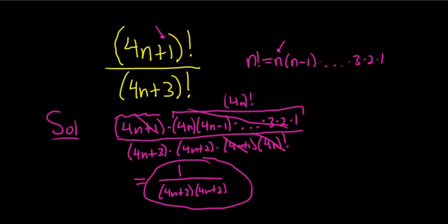There's a faster way to do this. If I was doing this on my own, I would do it like this. Watch this. 4n plus 1 factorial over 4n plus 3 factorial. This is the fastest way to do it.